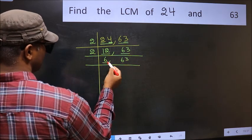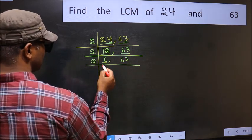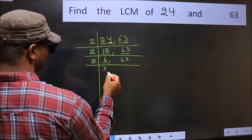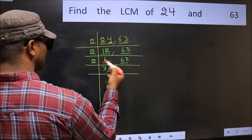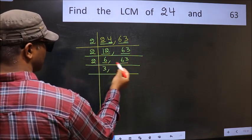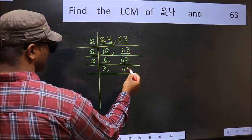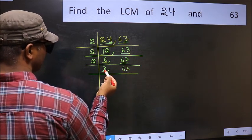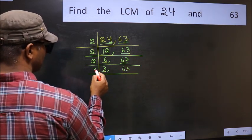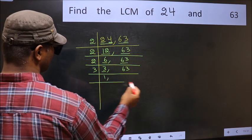Now here we have 6. 6 divided by 2 is 3. The other number 63 is not divisible by 2, so you write it down as it is. Now here we have 3. 3 is a prime number, so 3 times 1 is 3.